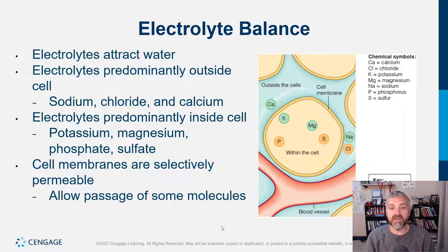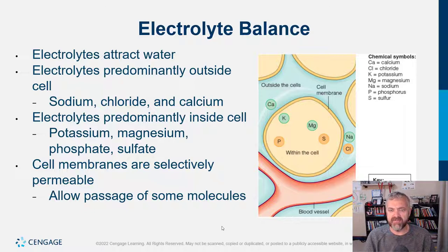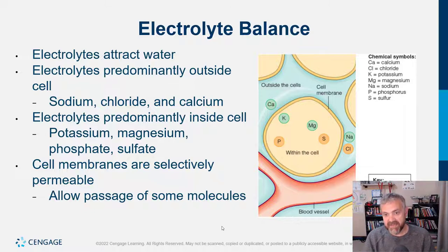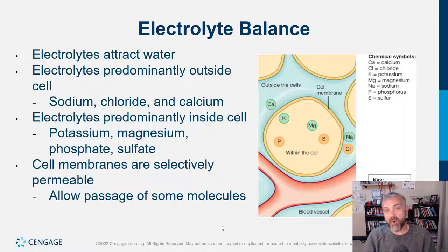The electrolytes predominantly outside the cell are sodium, chloride, and calcium. Those predominantly inside the cell are potassium, magnesium, phosphate, and sulfate. We won't talk about all of these equally — some like phosphate are super important but if you're eating protein you don't need to worry about it. We'll mainly focus on the ones that are harder to get. Magnesium is arguably one of the hardest nutrients to find for someone eating a typical diet. Cell membranes are selectively permeable, which is the definition of osmosis — the movement of water across a selectively permeable membrane. Since electrolytes stay where they are, water moves instead, and you control body water distribution by which electrolytes you consume.